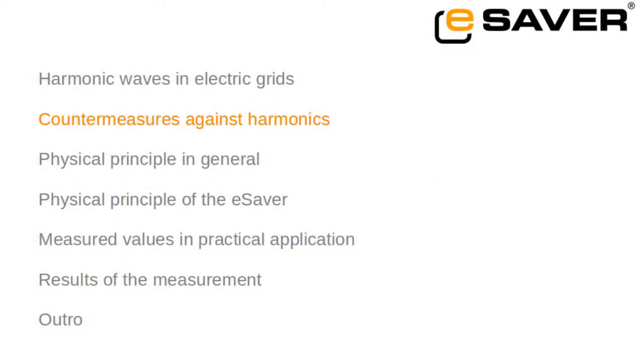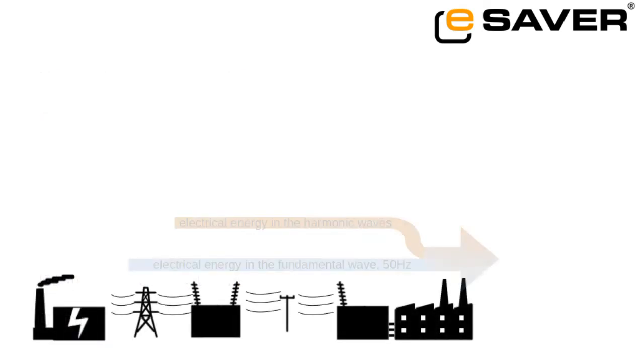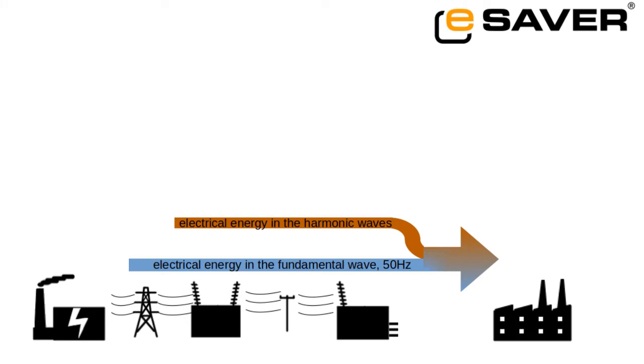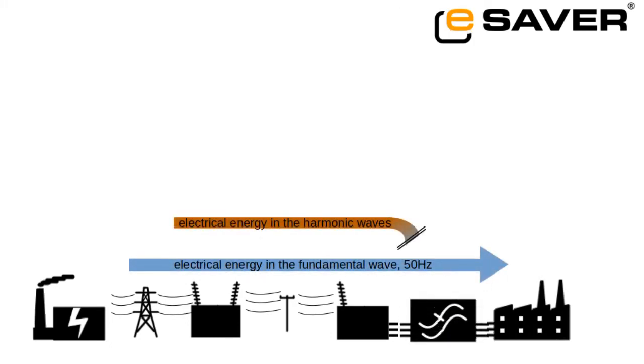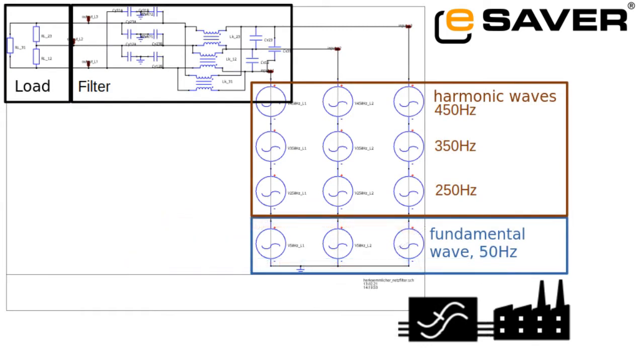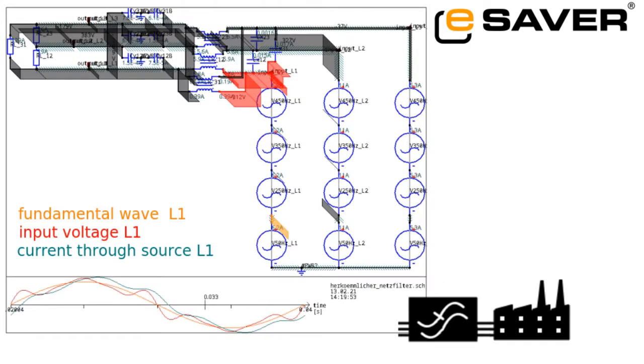Countermeasures against harmonics: It is possible to suppress the harmonics by low-pass filters. A low-pass filter is a circuit which can be connected in front of the respective device and which straightens the current flow through the device. That is, the low-pass filters allow the 50 Hz fundamental wave to pass, but they block the harmonic wave. So at the output of the low-pass filter, you only get the fundamental wave.